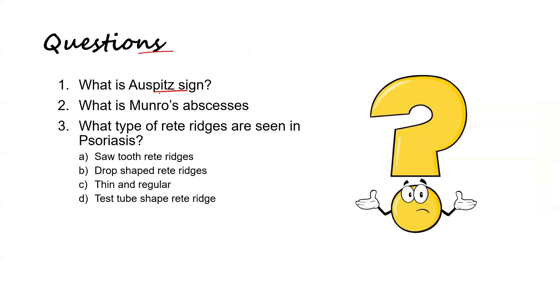Before ending the video, here are three questions for you: What is the Auspitz sign? What is Munro's abscess? And what type of rete ridges are seen in psoriasis? With this, we come to the end of the video. Thank you so much for watching — have a great day.